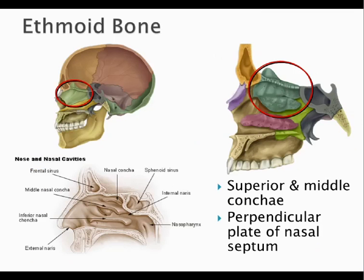Looking at a lateral view, the ethmoid bone is in green. You can see the cribriform plate and the crista galli on top. Just below it you have the conchae — superior and middle conchae, which are structures on the ethmoid bone. Compare that to the inferior nasal concha just inferior, which is a separate bone serving a similar purpose. The inferior nasal concha is C-shaped. So we just covered the cranial bones, and in the next section we're going to get into the facial bones.